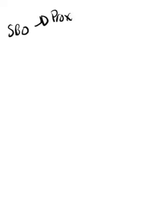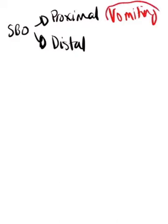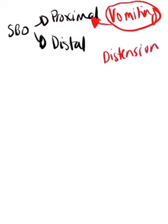We can split small bowel obstruction into proximal and distal, and there are key differences. Vomiting is more prominent in proximal small bowel obstructions compared to distal. Abdominal distension is more prominent with distal SBOs. But comparing on a bigger spectrum, large bowel obstruction will produce a greater distension than distal SBO.